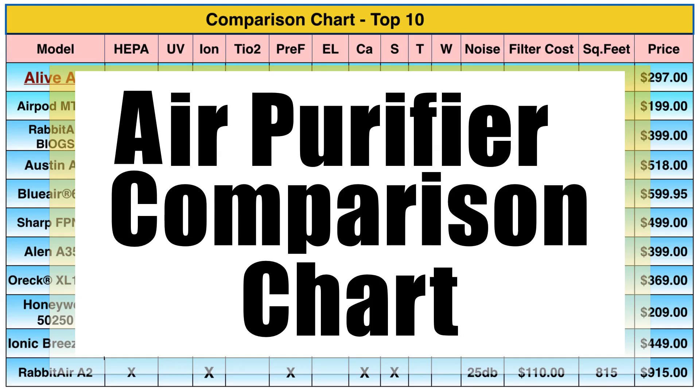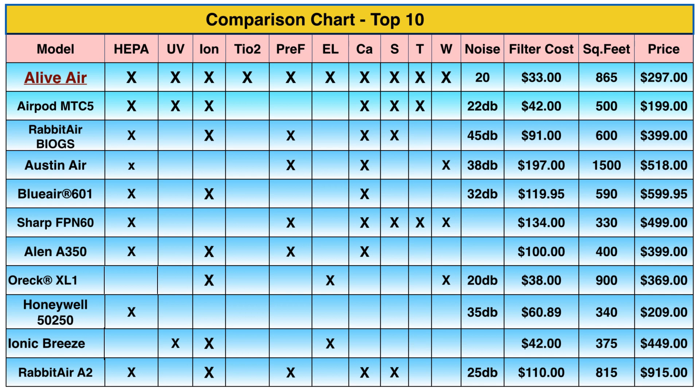Here's your air purifier comparison chart for the year with specs on 10 of the leading air purifiers on the market. The columns include: models listed, HEPA filter, UV light, negative ion, TiO2, pre-filter, electrostatic (EL), and carbon (CA).